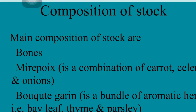If you want to make stock, you need 4 basic things. The first is bone — whatever stock you are making, you require the bone of that animal. For example, if you are making chicken stock you require chicken bones, beef stock requires beef bones, mutton stock requires mutton bones.